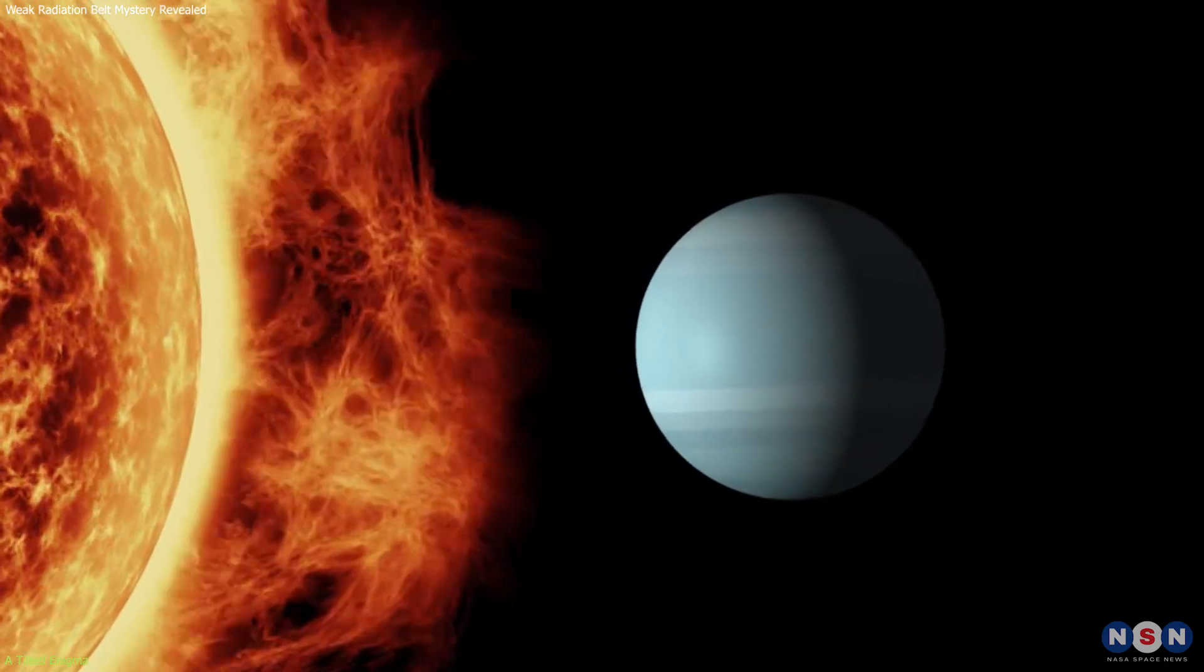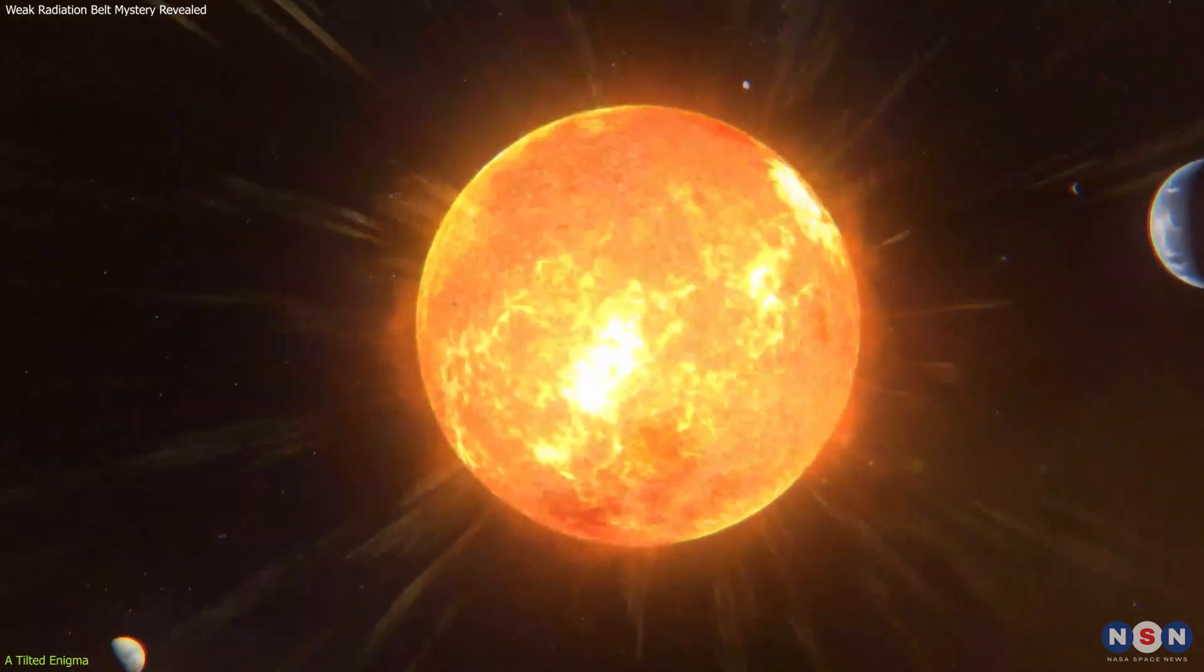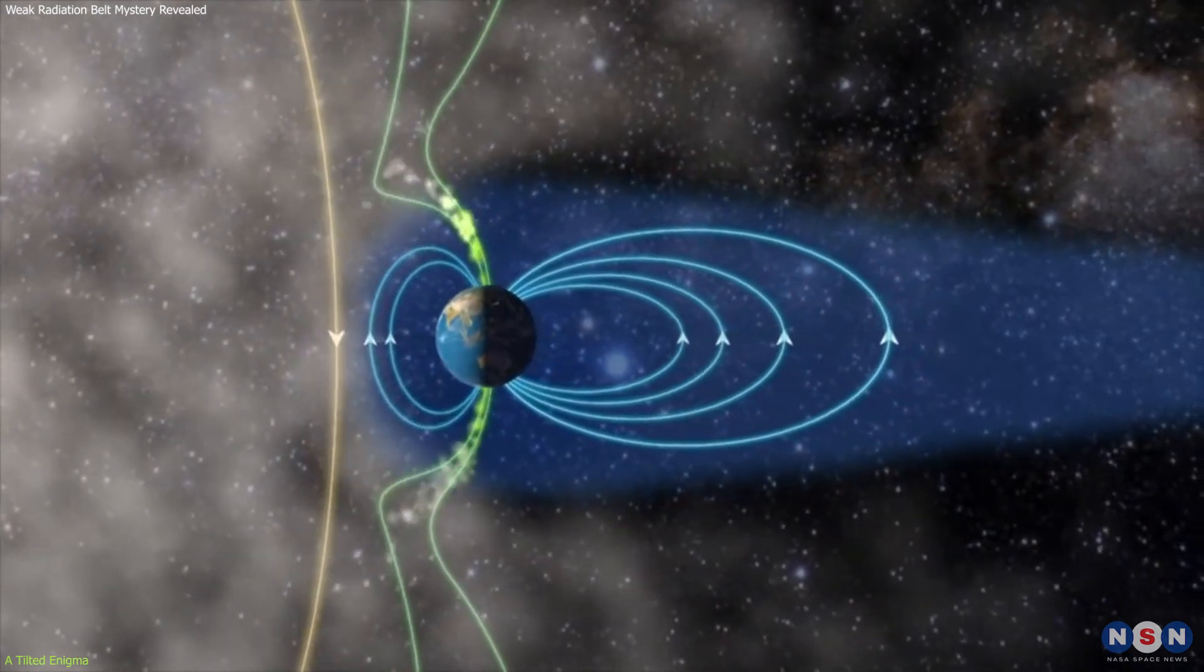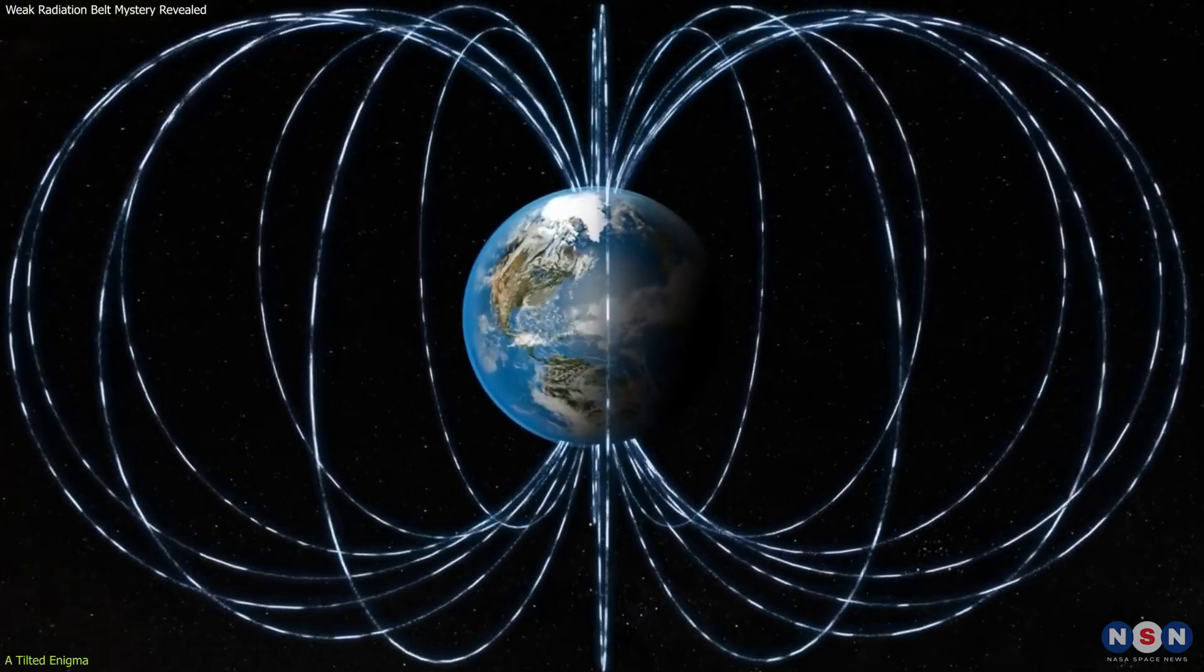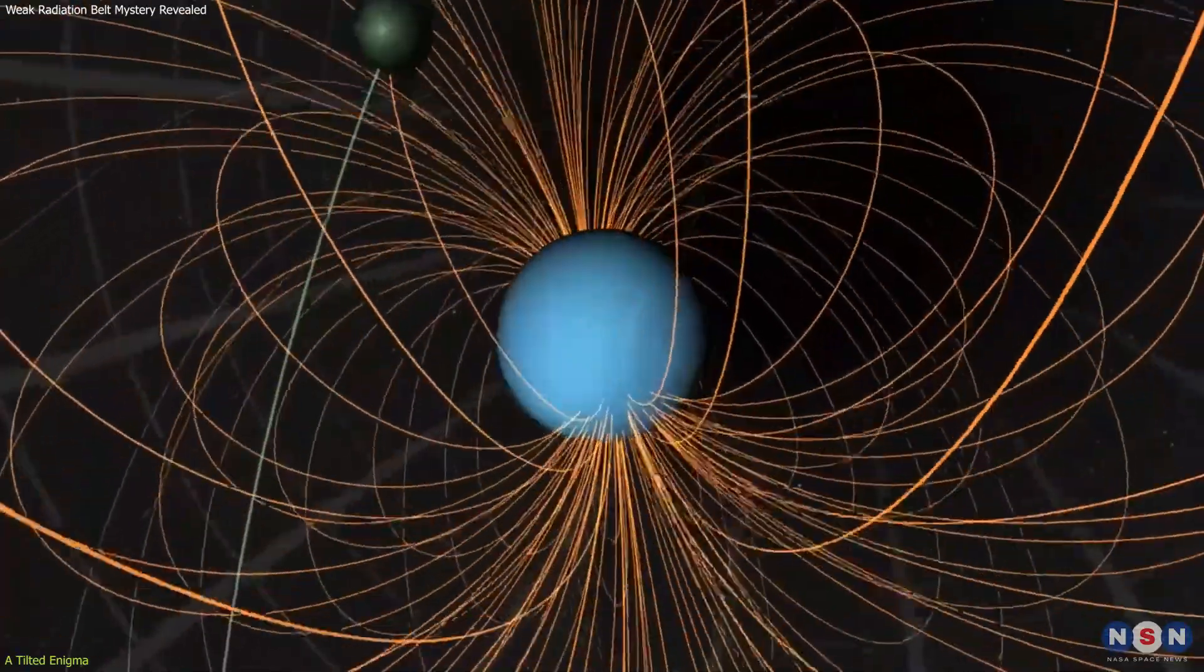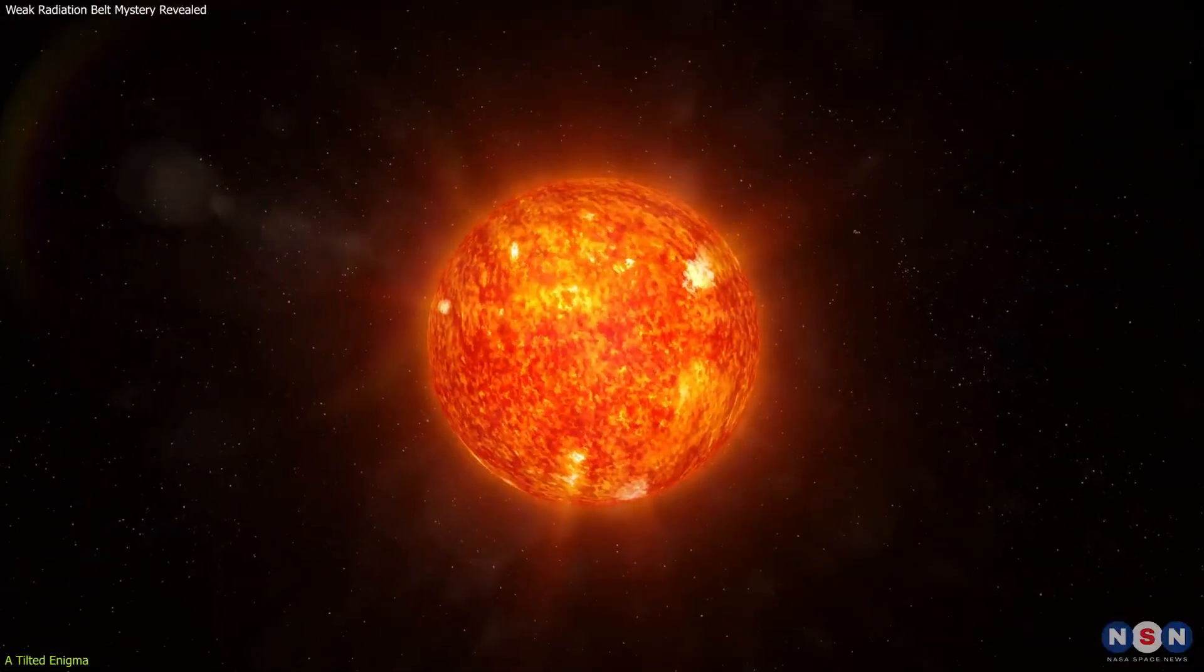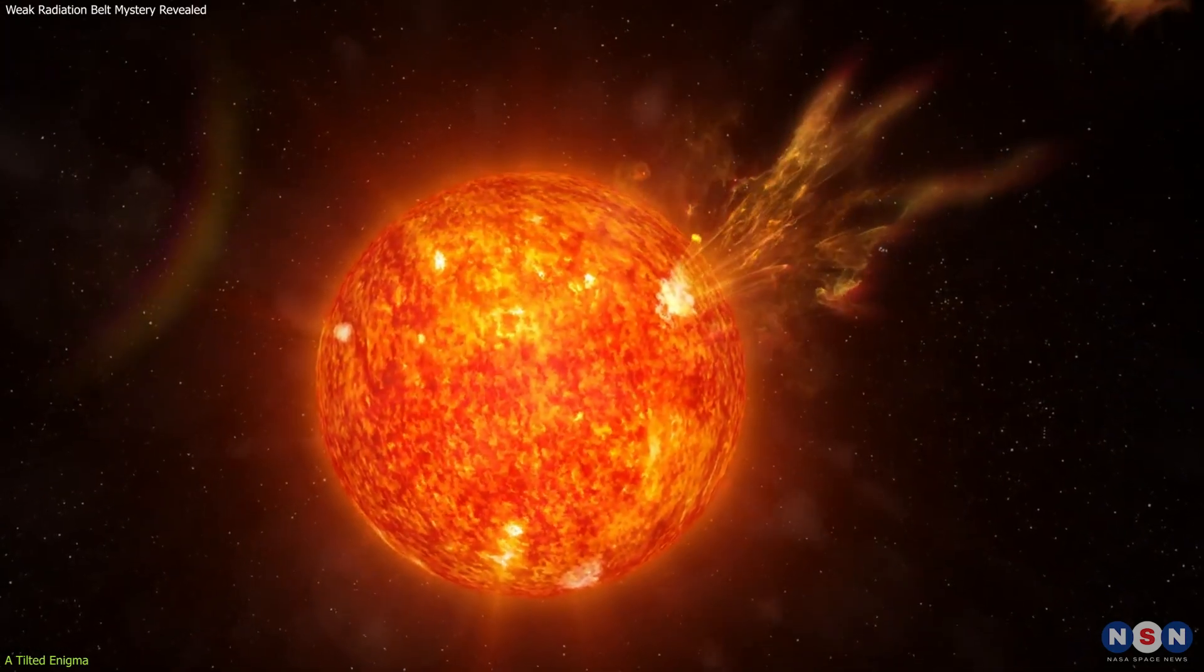Moreover, this tilt impacts how Uranus interacts with solar winds, which are streams of charged particles emitted by the Sun. A typical planet with a well-aligned magnetic field captures these particles symmetrically, creating a balanced and predictable magnetosphere. But Uranus' tilted field results in a lopsided interaction with these solar winds, leading to irregular magnetic activity and affecting the planet's ability to trap and hold these charged particles in radiation belts.